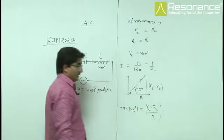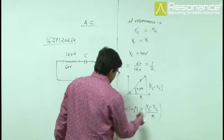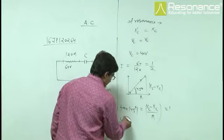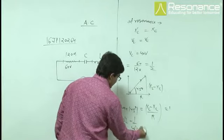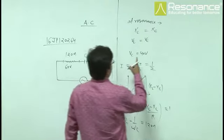In this condition, XL is not equal to XC because now omega is changed. So, tan 45 is 1. XL we write omega dash L minus 1 by omega dash C equals 120 ohm, and from this above relation,